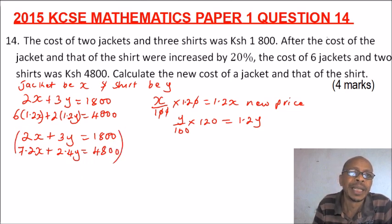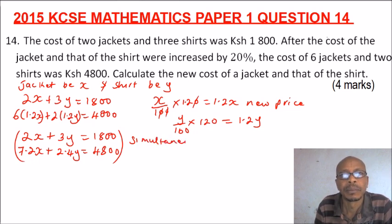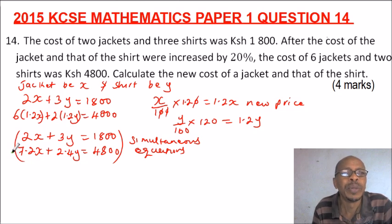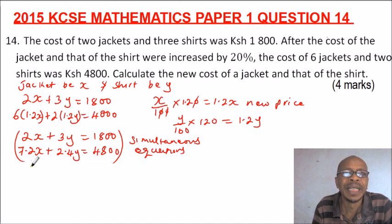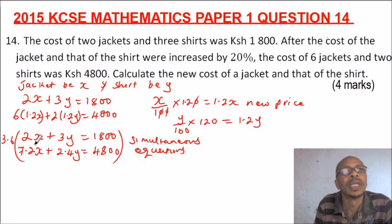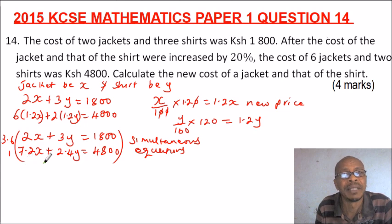These are simultaneous equations. To solve them, we want to eliminate one of the unknowns. We can eliminate x by multiplying the first equation by 3.6, because 3.6 times 2 will give us 7.2, matching the coefficient in the second equation.